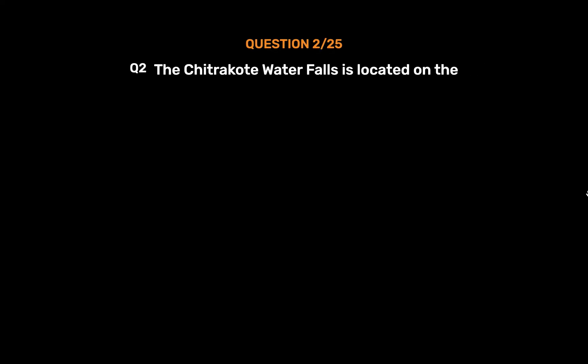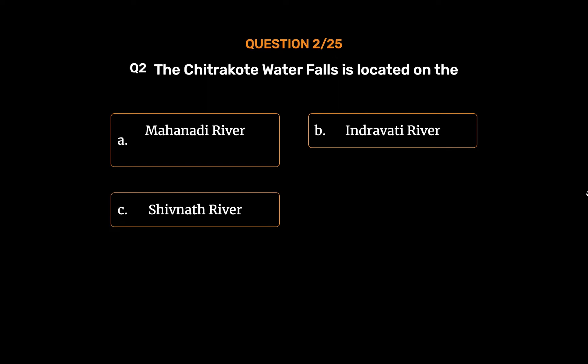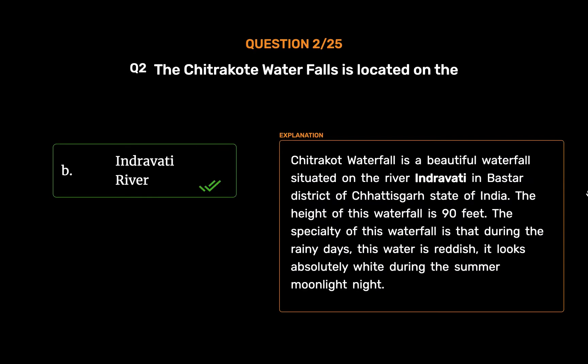Question No. 2: The Chitra Kote waterfall is located on the — Option A: Mahanadi River. Option B: Indravati River. Option C: Shivanath River. Option D: Rihand River. The correct answer is Option B: Indravati River. Chitra Kote waterfall is a beautiful waterfall situated on the river Indravati in Bastar district of Chhattisgarh. The height of this waterfall is 90 feet. The water is reddish during rainy days, and looks absolutely white during summer moonlight nights.